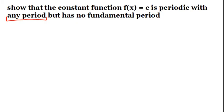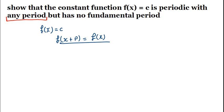We are given the constant function f of x equals c — it can be 1, 2, or anything. This is actually periodic if f of x plus p, which is our period, is equals to f of x. So we have to do the checking.